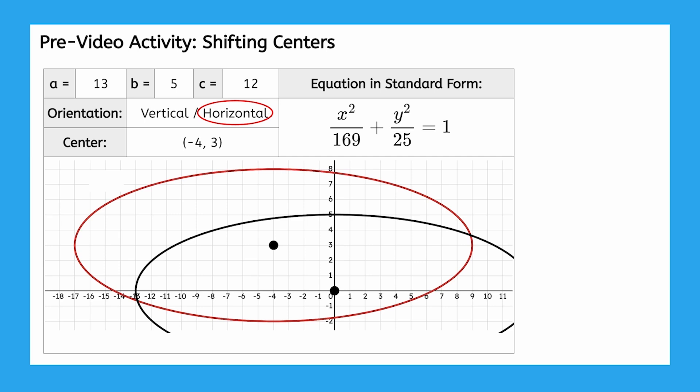Well, they are the exact same ellipse but in different places. More precisely, if we translate the ellipse centered at the origin 3 units up and 4 units left, we get our ellipse with center negative 4, 3.